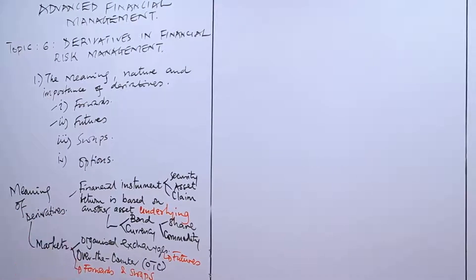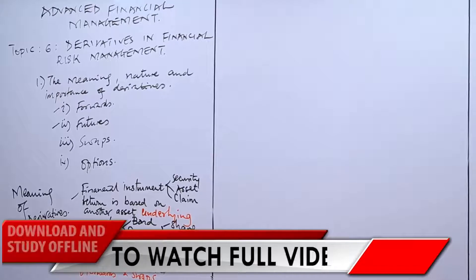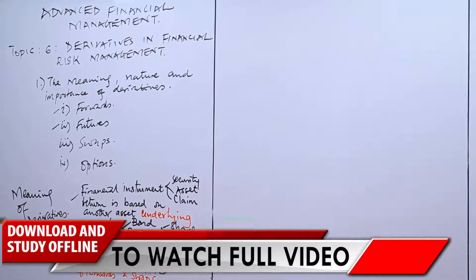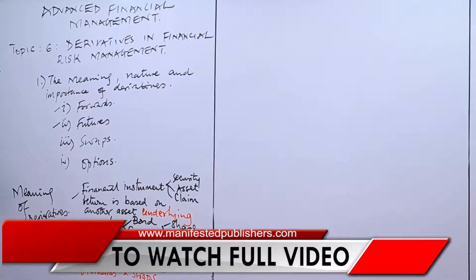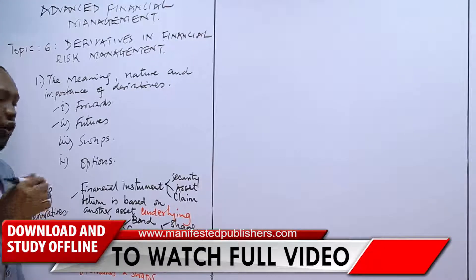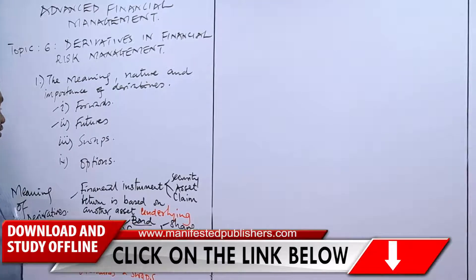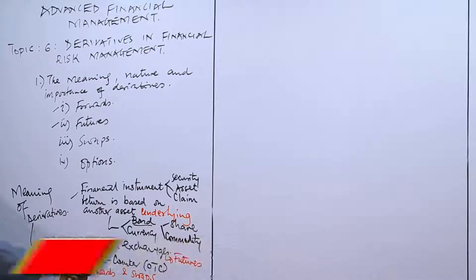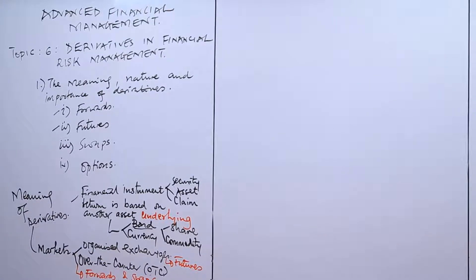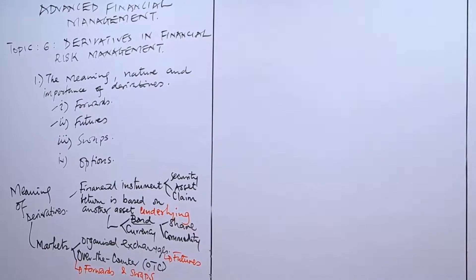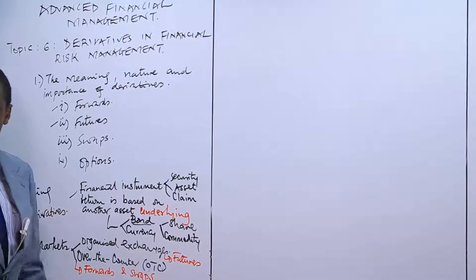For options, options normally trade over-the-counter. But there are options that also trade on the OTC — these are what we call bond options, the options in which the underlying is a bond. But the majority of options trade in the organized exchanges. So having understood what a derivative is, let us look at the types of derivatives.